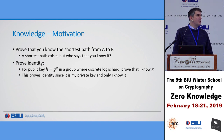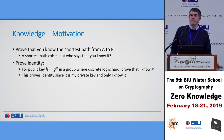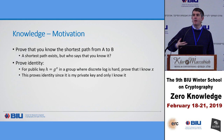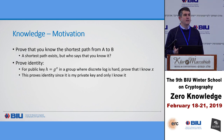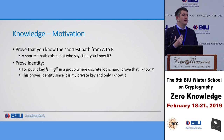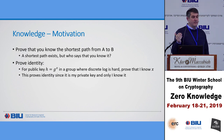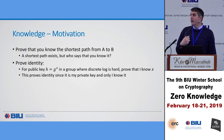h is my public key, and I'm going to prove that I am the owner of the private key — proving my identity by proving that I know x, so that g to the power of x equals h. Since only I know my private key, this will prove my identity. So a way of proving your identity via your key pair is by proving that you know the private key.